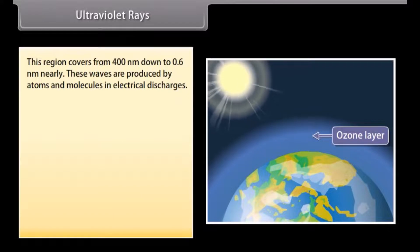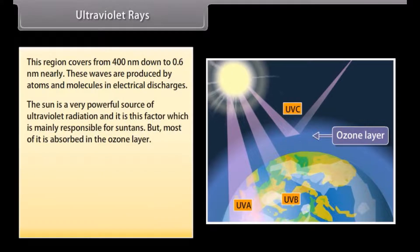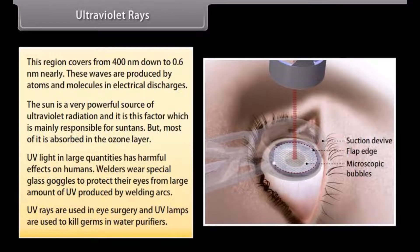Ultraviolet rays cover from 400 nm down to about 0.6 nm. These waves are produced by atoms and molecules in electrical discharges. The sun is a very powerful source of ultraviolet radiation, mainly responsible for suntans, but most of it is absorbed in the ozone layer. UV light in large quantities has harmful effects on humans; welders wear special glass goggles to protect their eyes from UV produced by welding arcs. UV rays are used in eye surgery, and UV lamps are used to kill germs in water purifiers.